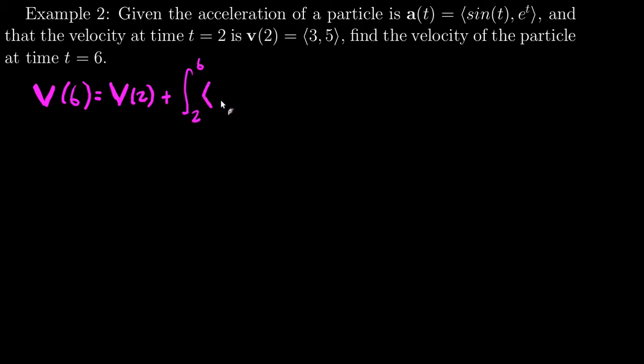And I'll just put in sine of t, e to the t, dt. v of 2 is 3, 5. This antiderivative is negative cosine t, e to the t. And I evaluate that antiderivative from 2 to 6.